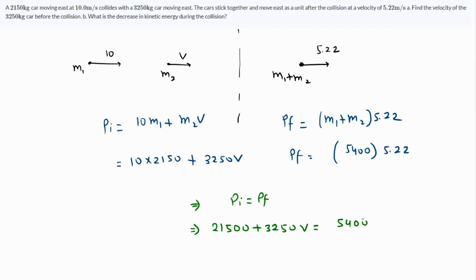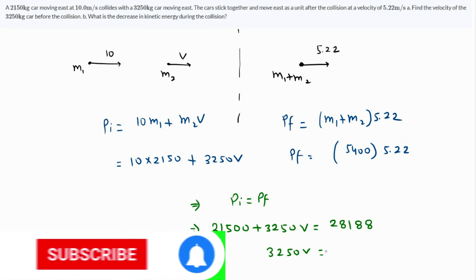...5400 times 5.22, which is 28188. Subtracting 21500 from both sides we get 6688.